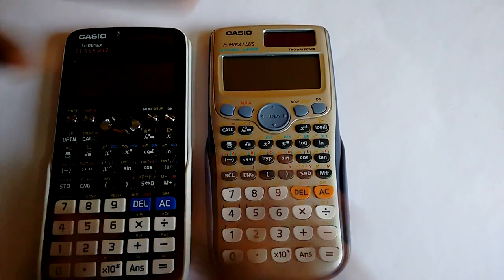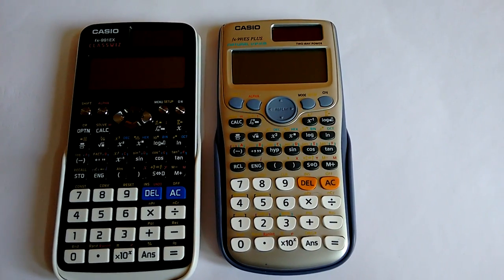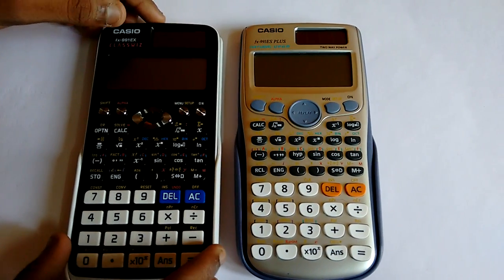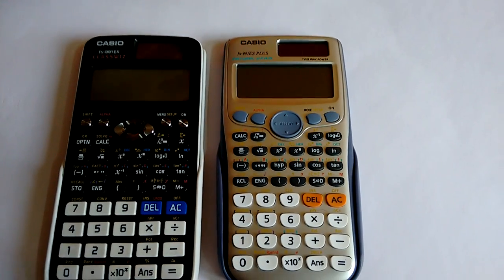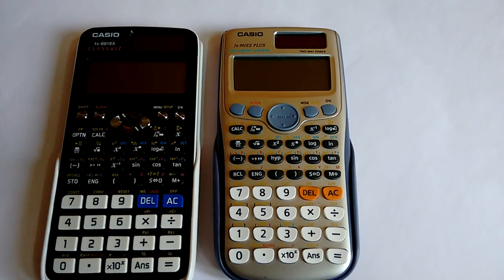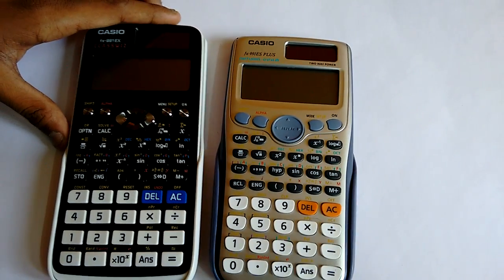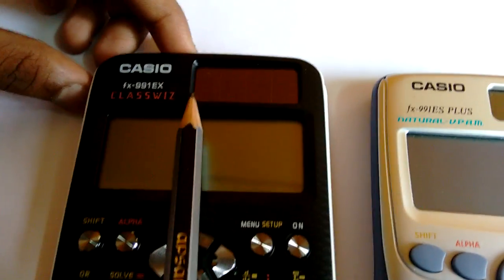As you can see they both don't look alike and they are completely different. The EX version has 50 buttons and the ES Plus version also has 50 buttons. They both have good design actually and the solar panel is a bit smaller on the ES Plus version than the EX version.